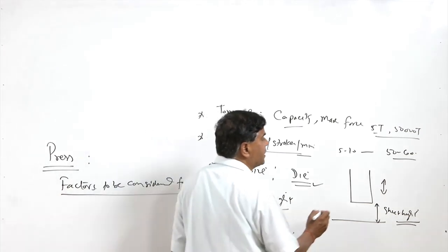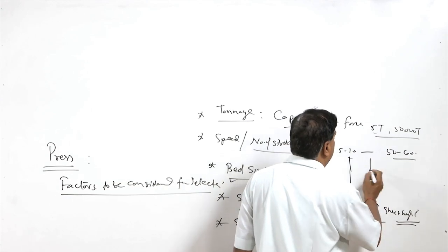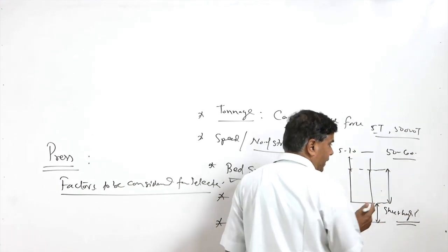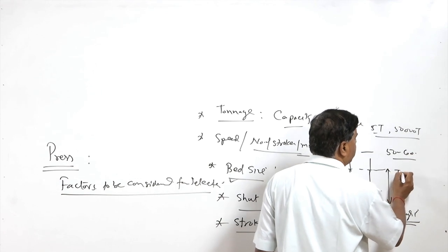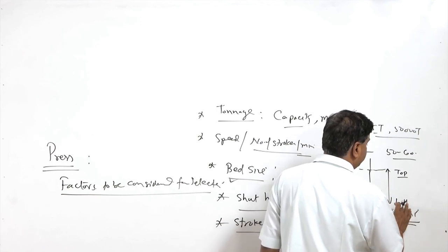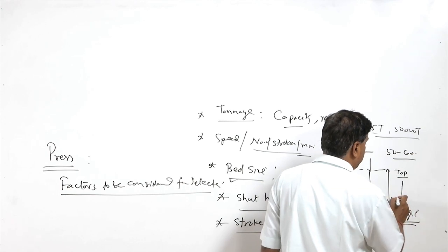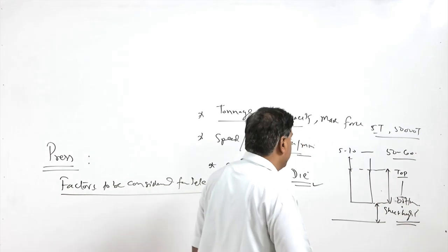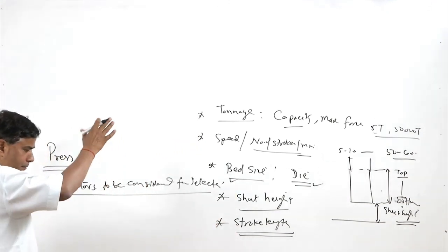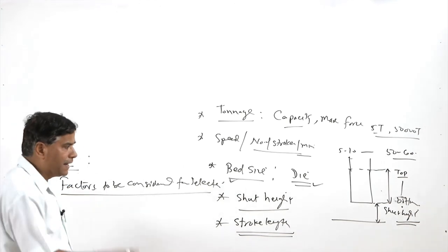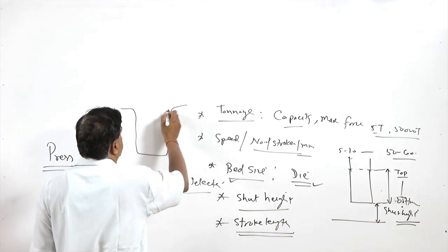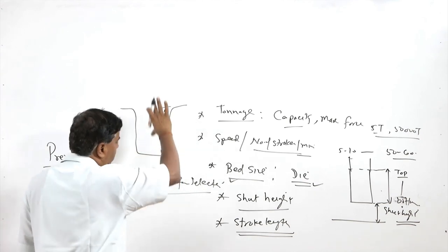Then the stroke length. Stroke length indicates the extent of movement of the RAM from its uppermost to its lowermost position — this movement from the top level to the bottom level is called the stroke length. It determines the maximum depth up to which the RAM will be able to act on the sheet, and in the drawing process, it determines the maximum depth achievable through a particular stroke.